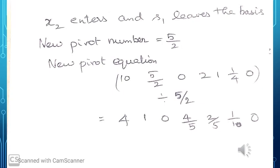The new pivot element is 5/2. The new pivot equation (for X2) = old S1 row [10, 5/2, 0, 2, 1, 1/4, 0] divided by 5/2 = [4, 1, 0, 4/5, 2/5, 1/10, 0].